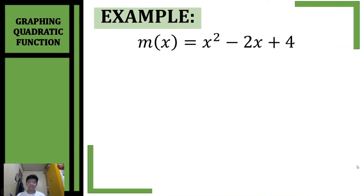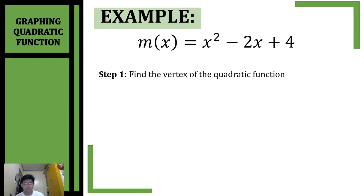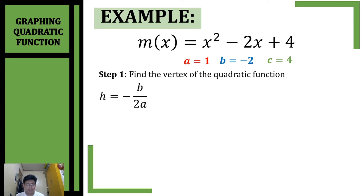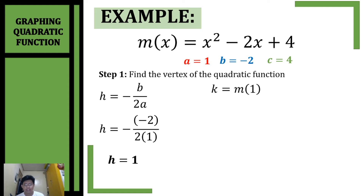Let's have an example. We're going to graph this quadratic function. First step is to find the vertex. Knowing that our quadratic function is written in standard form, we need to get the values of a, b, and c. Our value of a is 1, b is negative 2, c is 4. To find our vertex we will use the formula negative b over 2a to find the x-coordinate. Substituting a and b into our formula and simplifying, h is equal to 1.